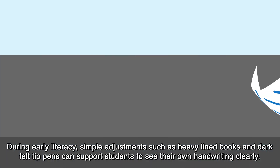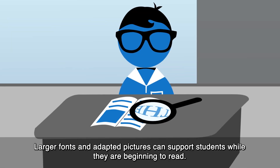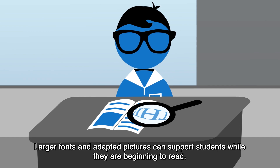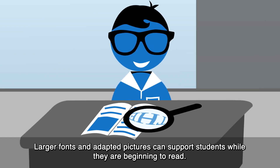During early literacy, simple adjustments such as heavy-lined books and dark felt-tipped pens can support students to see their own handwriting clearly. Larger fonts and adapted pictures can support students while they are beginning to read.